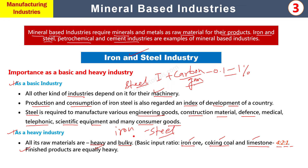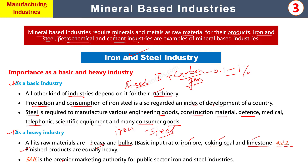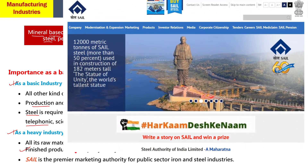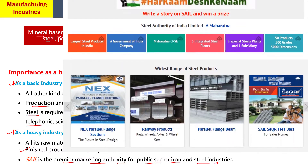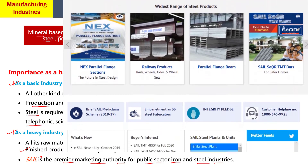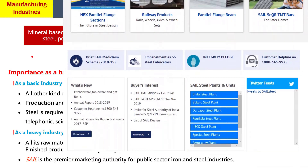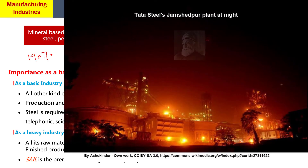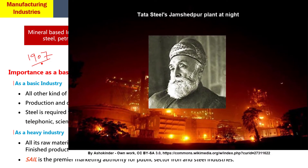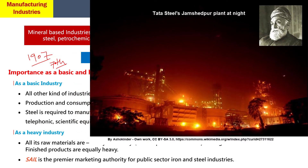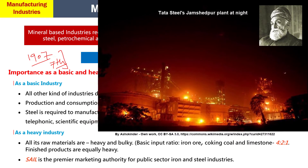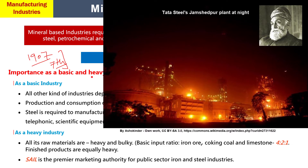Government authority یعنی Steel Authority of India Limited (SAIL) India کی premier marketing authority ہے جو public sector کے iron and steel plants کی marketing کرتی ہے اور private sector کے لوگ بھی اس کا use کرتے ہیں۔ Tata Iron and Steel جو 1907 میں Jamshedji Tata نے establish کیا تھا، India کا largest manufacturer ہے اور world میں 7th largest مانا گیا ہے لیکن یہ private sector کی company ہے۔